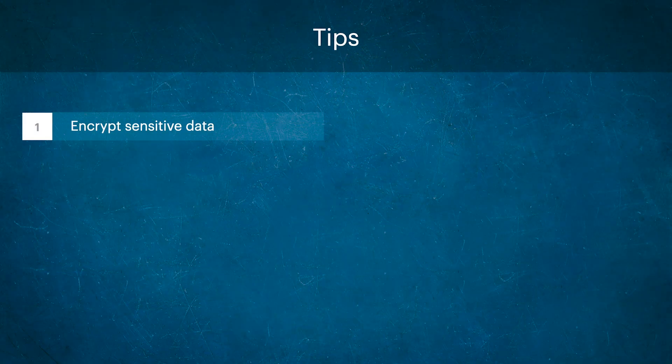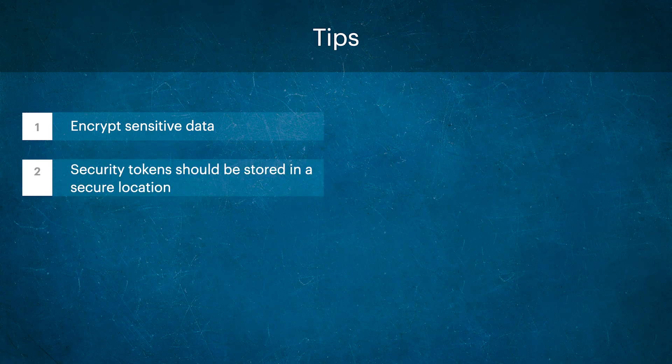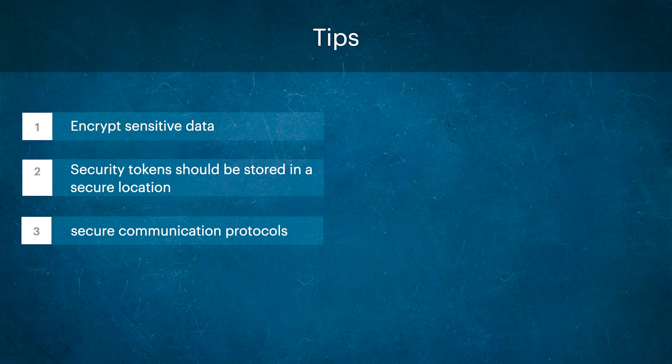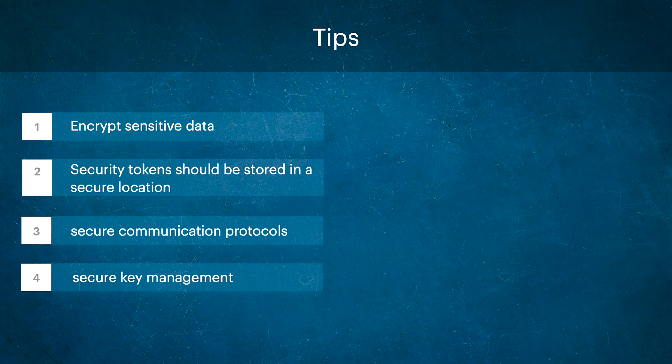Here are a few tips on how to secure passwordless authentication methods. Encrypt sensitive data such as biometric templates and security tokens both in transit and at rest, ensuring that even if data is intercepted it will be difficult for attackers to access. Store security tokens in a secure location such as a Hardware Security Module or a secure element in a device to protect against physical attacks. Use secure communication protocols such as HTTPS or SSH to protect data in transit, and use a secure key management solution to protect the encryption keys used to encrypt data.